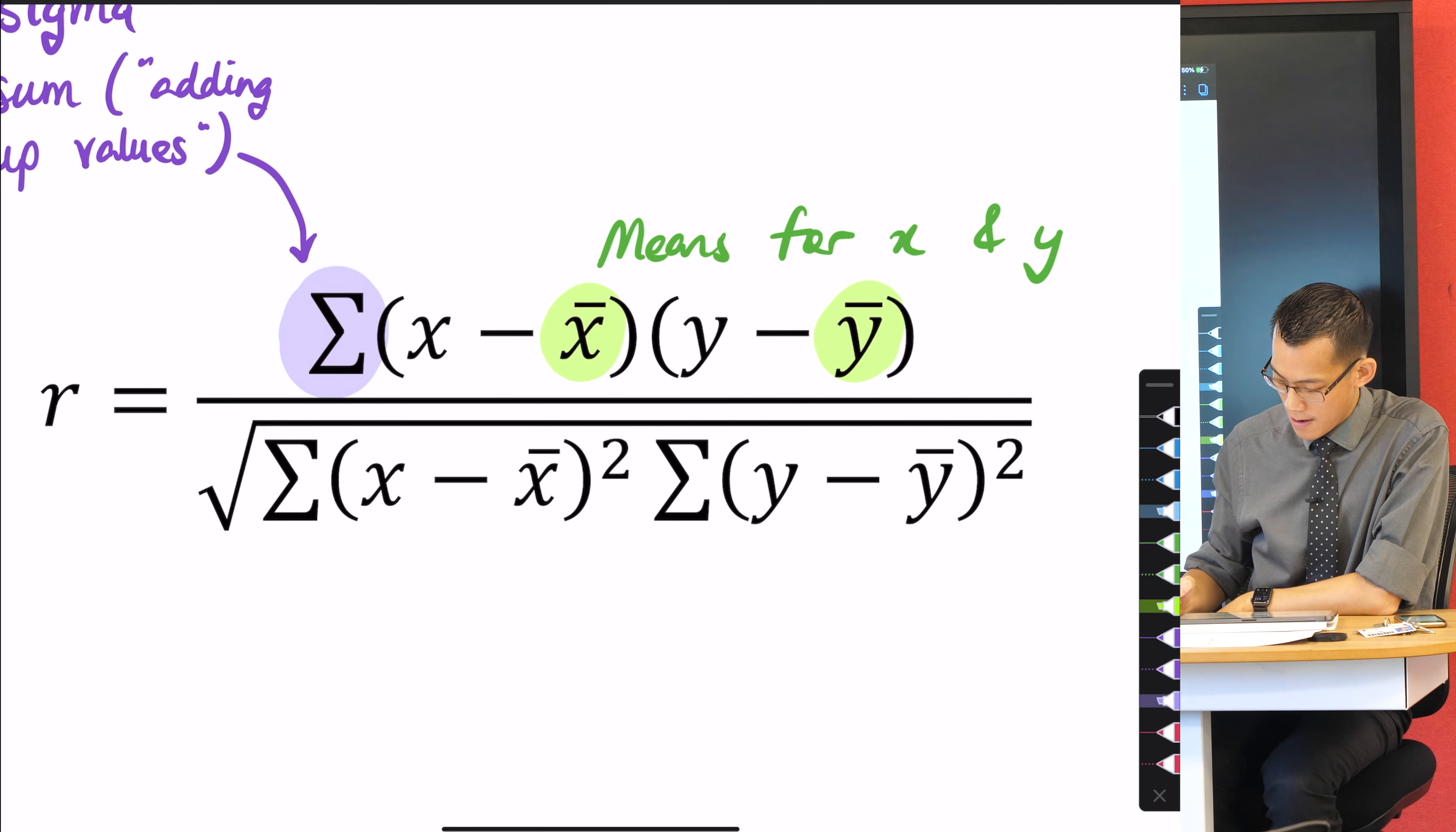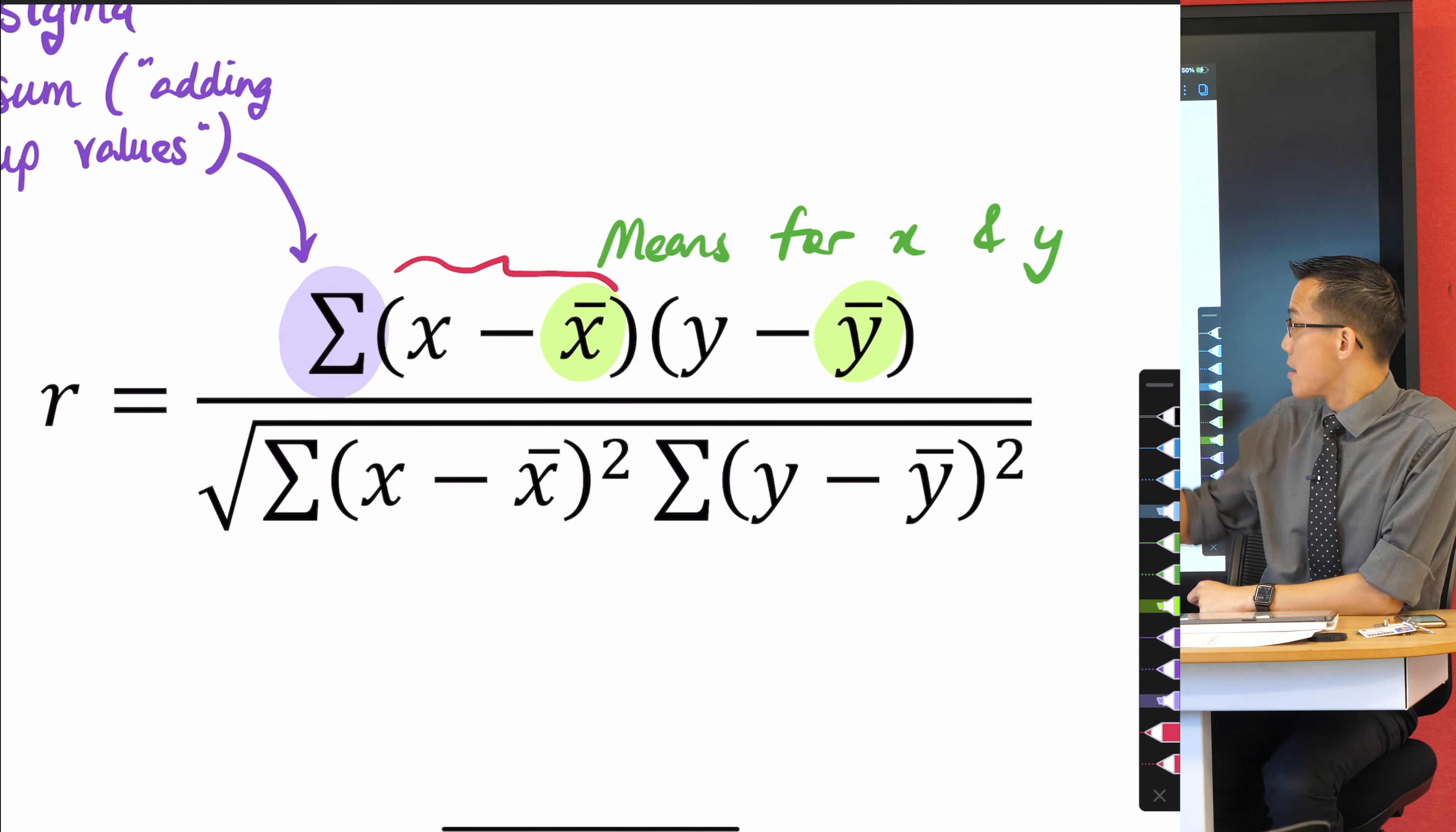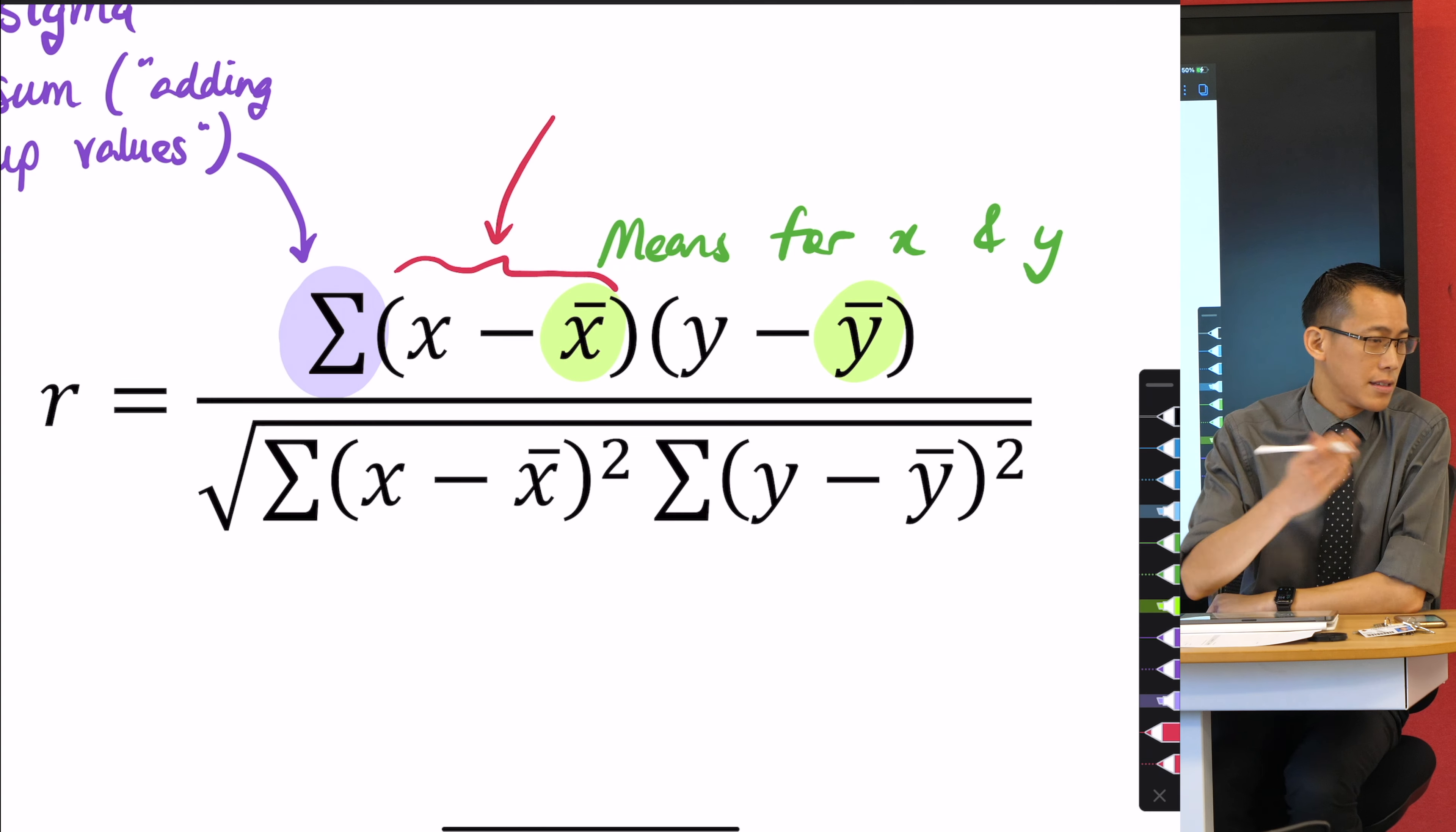Now tell me, you think about this: x, a particular x, take away the average for x. What is this telling us? When you subtract, let's think about this.